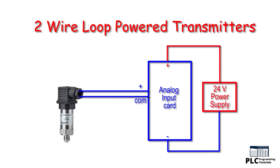2-wire loop powered transmitters: this configuration supplies power and the 4 to 20 milliamp signal over a 2-wire loop connection. Not all transmitters can be wired in this format — they must be specifically designed to accommodate this configuration. The advantages are low power consumption and that only a 2-core cable is required from the control panel to the transmitter.